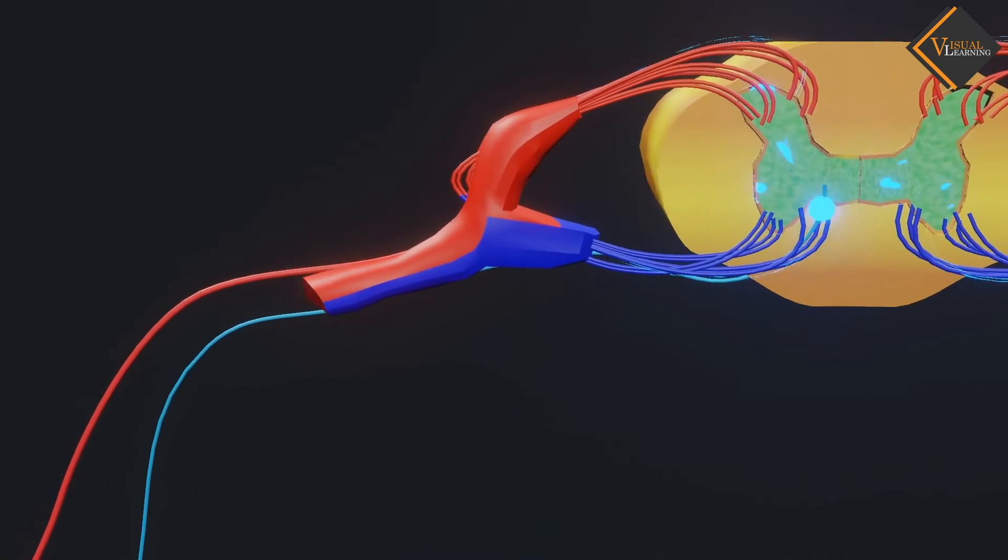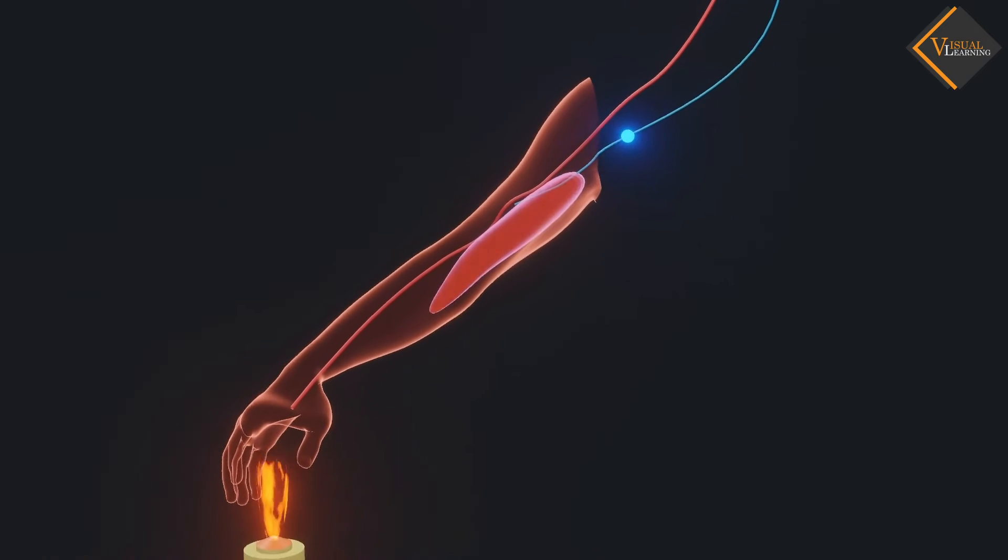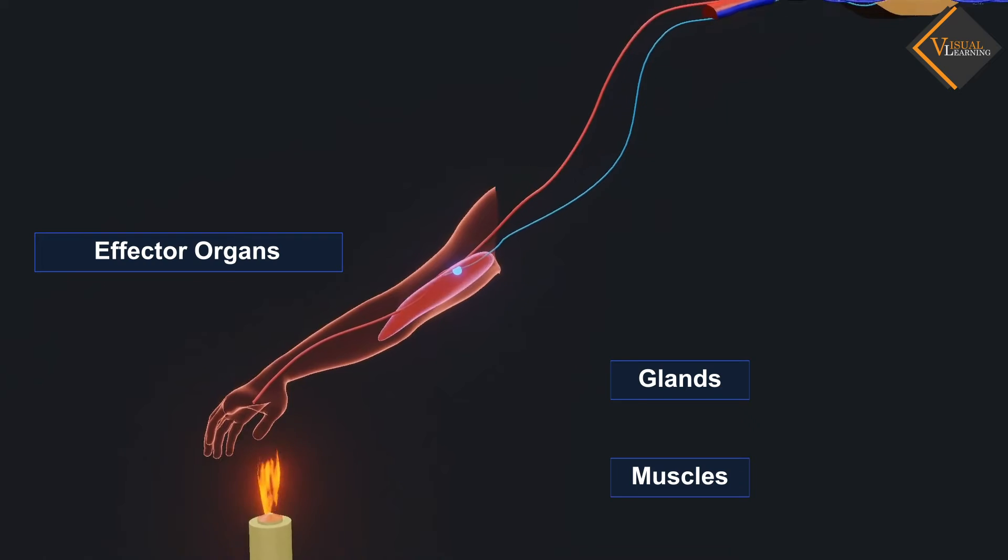The ventral horn of spinal cord has the motor neurons. Effector organs are the glands and muscles that behave in response to the stimuli.